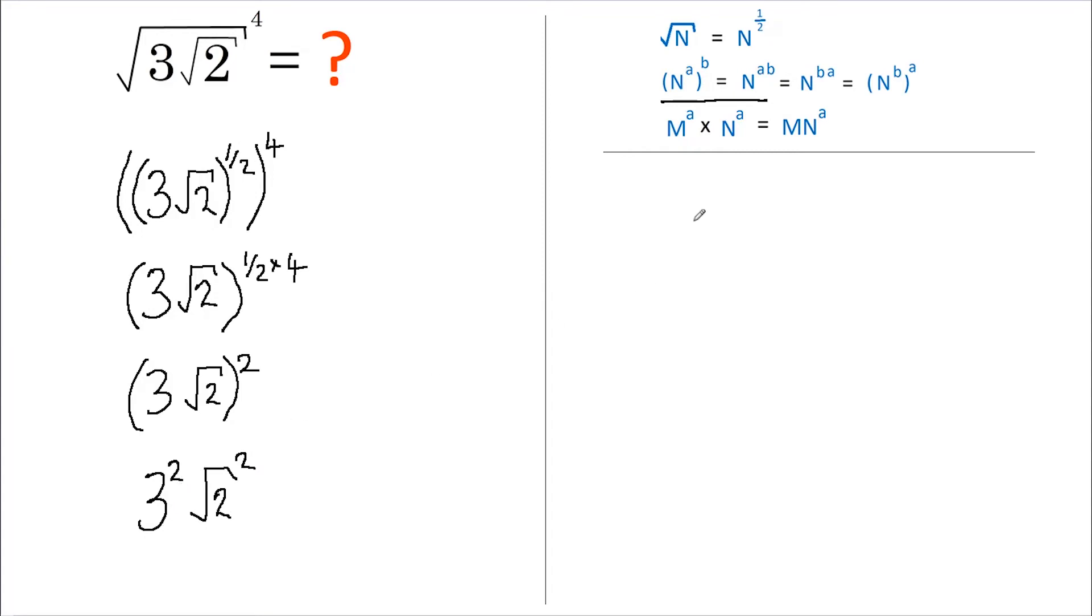Well, 3 to the power of 2 is 9, and root 2 to the power of 2 is 2. In other words, it's 9 times 2, which equals 18, and that's our answer. It's worth noticing here that if you've got two numbers multiplied together and they're raised to a power, that is the same as saying those two individual numbers, multiplied together, individually raised to that power.